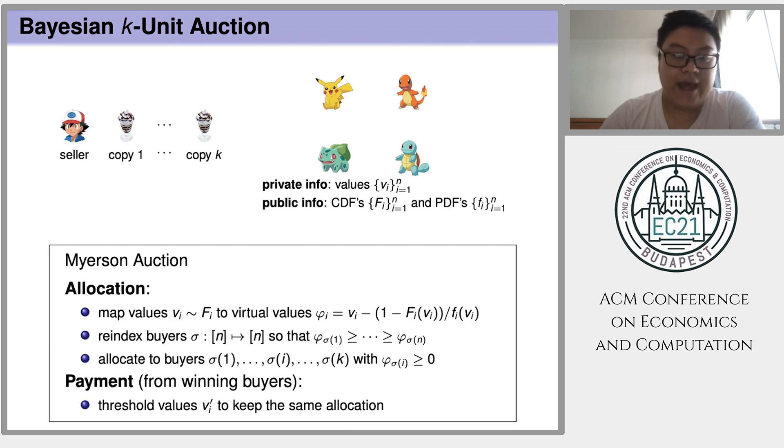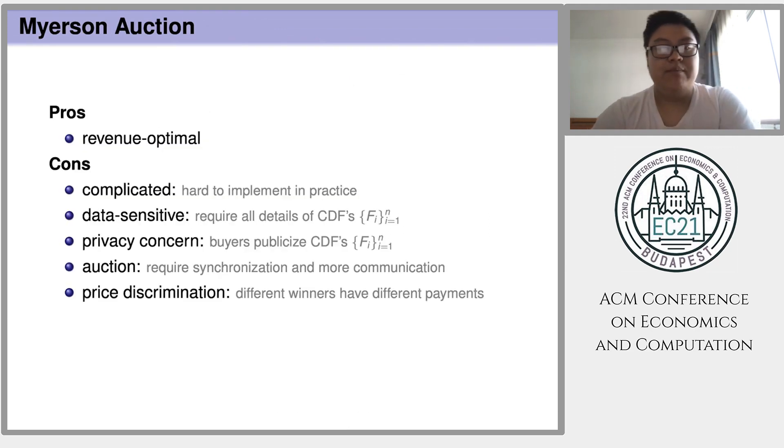Then, the seller re-indexes the buyers in the decreasing order of virtual values. The top K buyers who have the highest non-negative virtual value will win items, each of which will get a copy. The payment from each winning buyer is the threshold value for him to keep winning. The most important advantage of Myerson Auction is that it is revenue optimal.